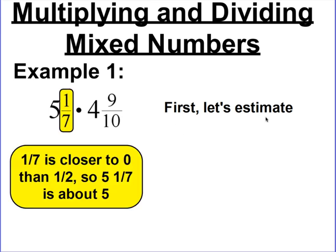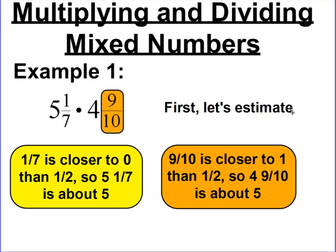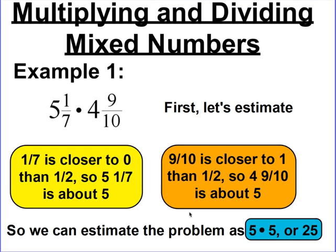We're going to estimate 5 and 1 sevenths to about 5, because 1 sevenths is closer to 0 than to one half, so we're going to estimate that to be about 5. For 4 and 9 tenths, we're going to estimate to 5 also — the whole number is 4, and 9 tenths is closer to 1 than to one half, so 4 and 1 together make 5. So if we take our two estimates, 5 and 5, and multiply them, our estimate is going to be 25. Our actual answer when we do our multiplying should be about 25.